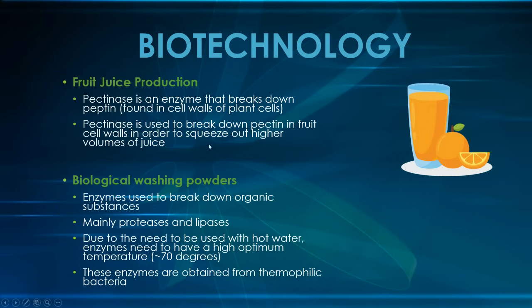In fruit juice production, you have enzymes called pectinase that are used to break down pectin found in the cell walls of plant cells. Pectinase breaks down pectin in fruit cell walls so that it becomes a lot easier to extract the juice from the fruit.